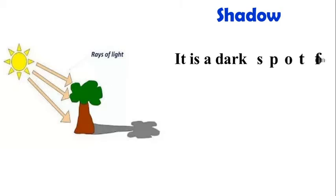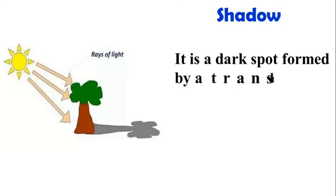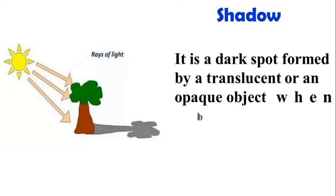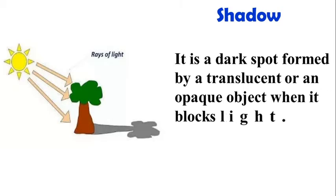Shadow: It is a dark spot formed by a translucent or an opaque object when it blocks light.